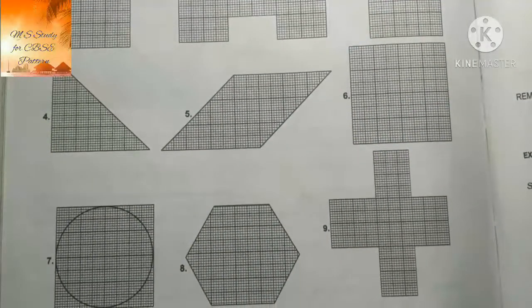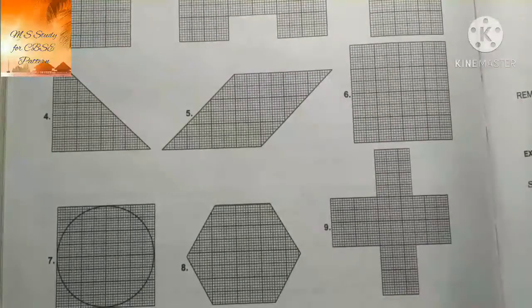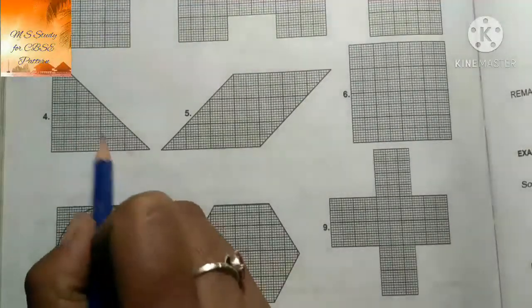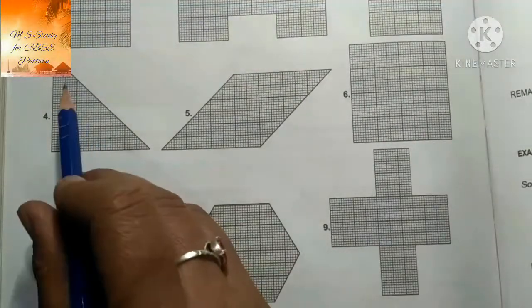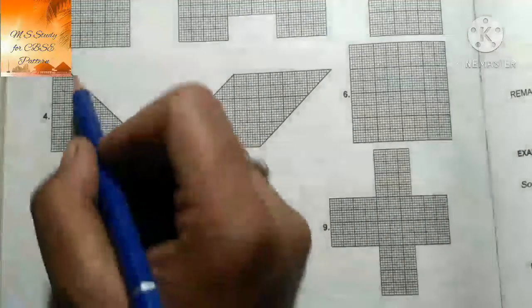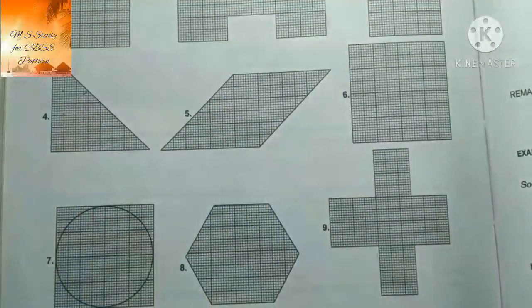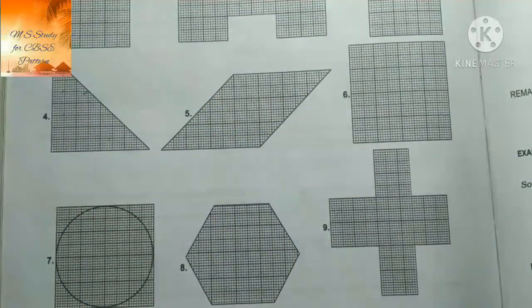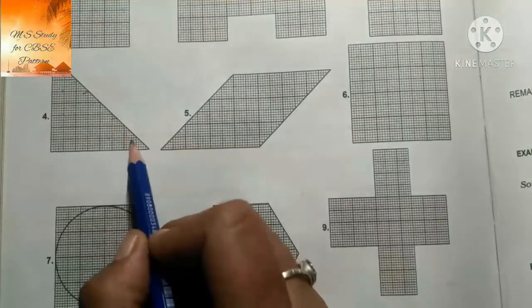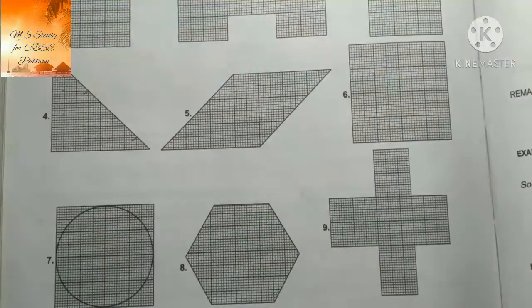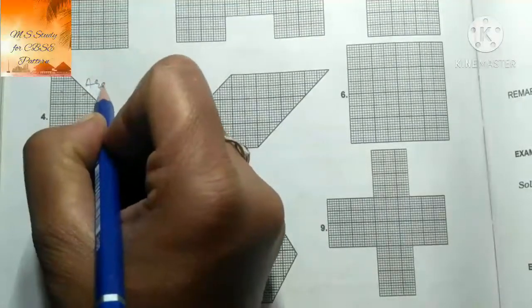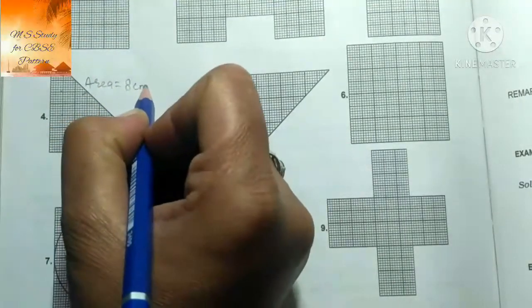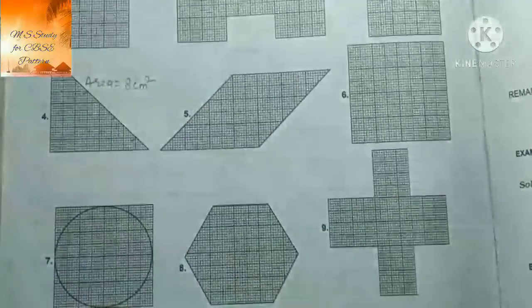Fifth वाले में देखते हैं। इसमें हमें देखना पड़ेगा because इसमें half वाले भी दे रखे हैं। 6 complete squares हैं। यह वाला half और यह वाला half मिलकर full हो जाएंगे यानि कि 7 हो गए। यह वाला half और यह वाला half मिलकर भी complete square बन जाएगा तो 8 हो गए। Area equals to 8 cm²।